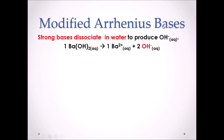Modified Arrhenius bases: strong bases still dissociate in water to produce OH−. Nothing has changed in the modified Arrhenius theory with respect to strong bases. For example, Ba(OH)2 is an ionic compound that dissociates in water to produce Ba2+ and 2OH−.